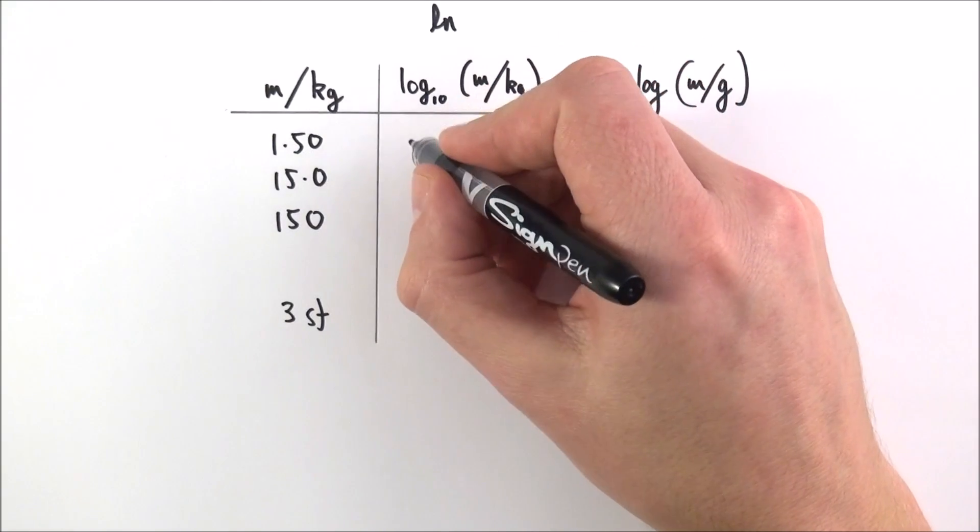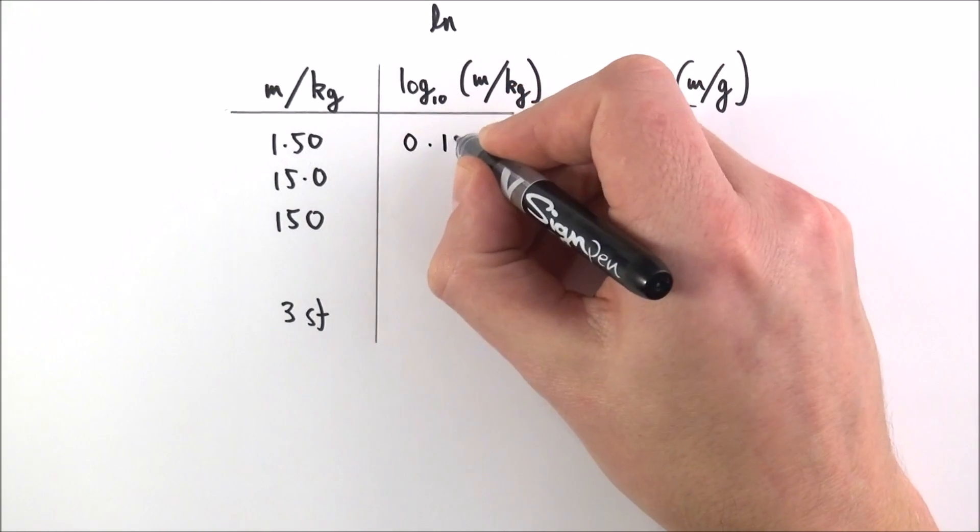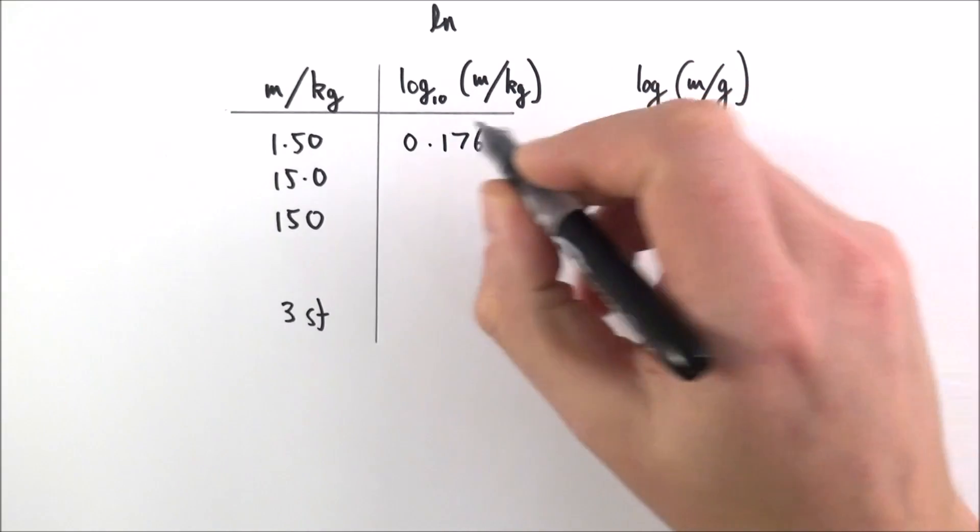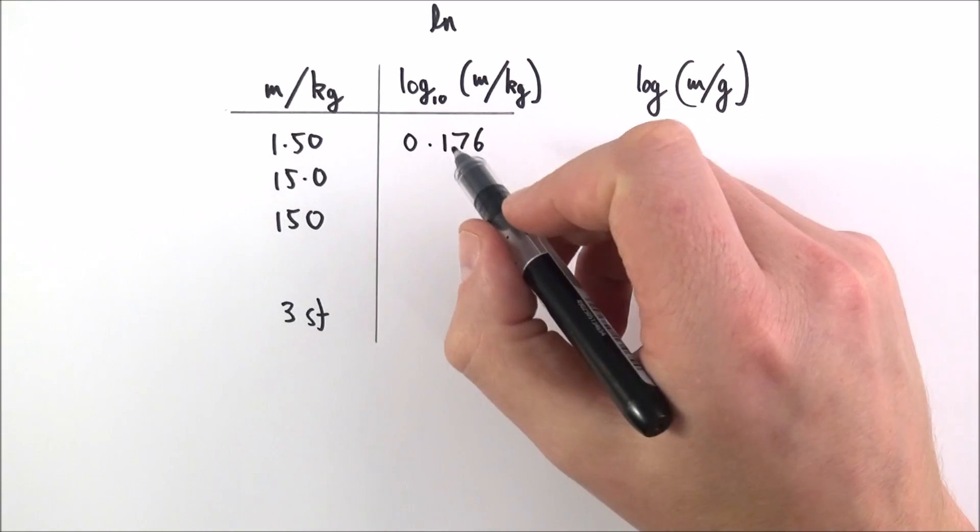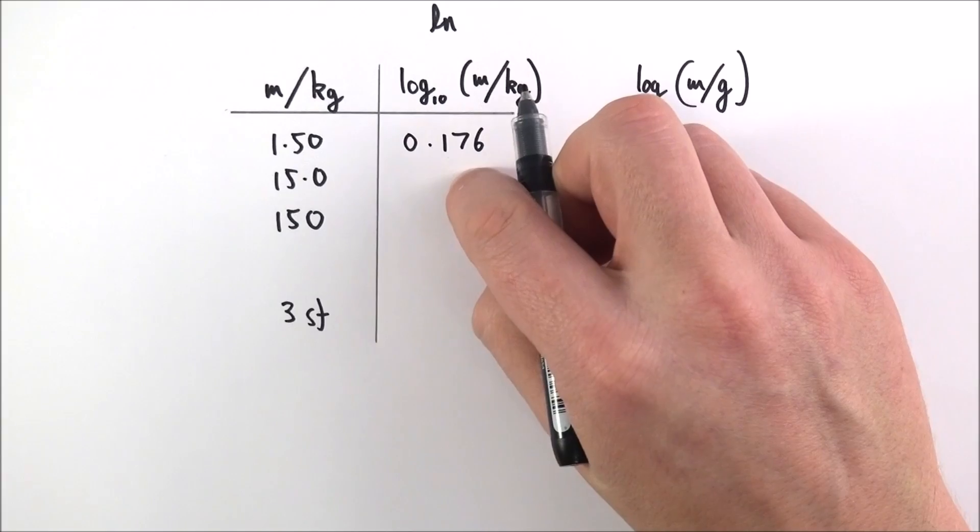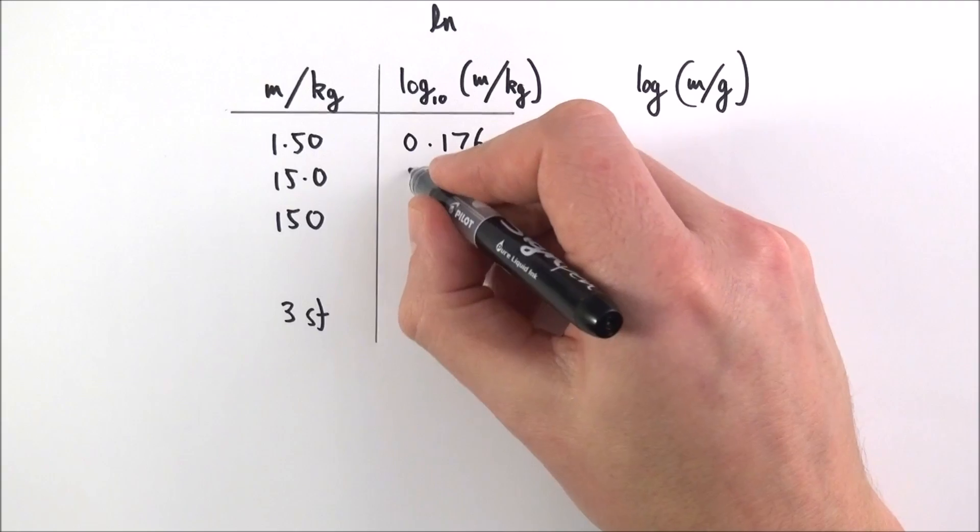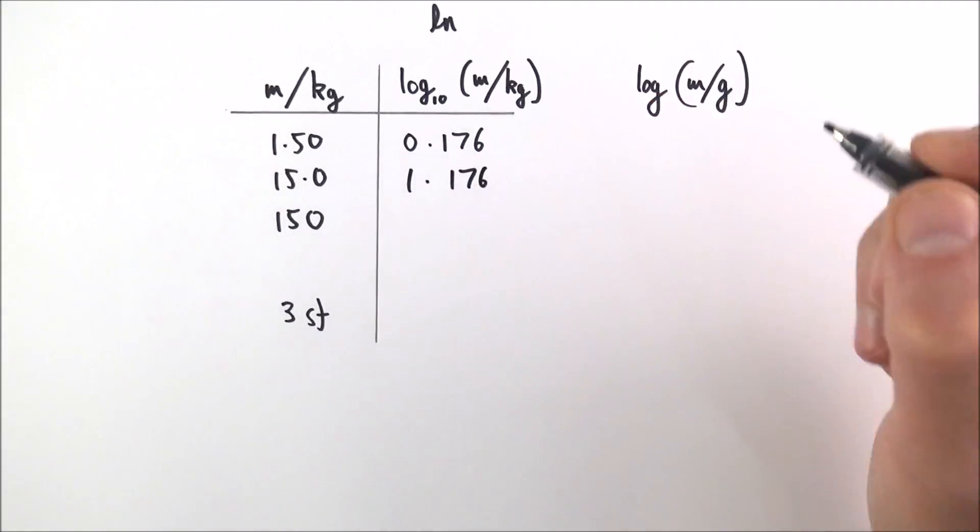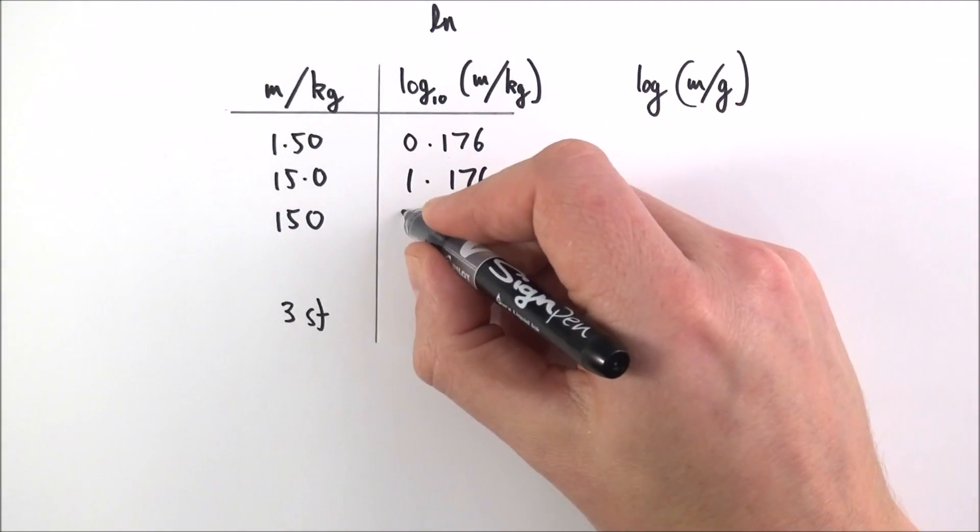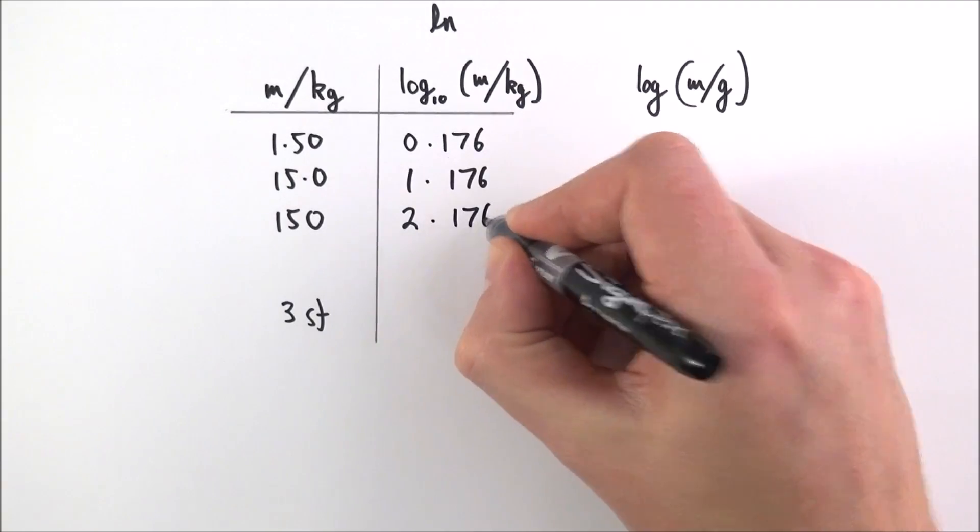My first value is 0.176. This is written to three significant figures and also given to three decimal places. If I try this on my calculator, I find that 15.0 equals 1.176, and 150 equals 2.176.